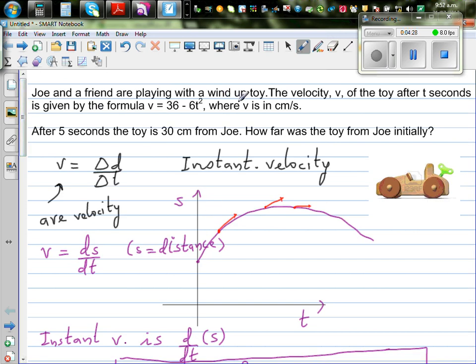Joey and a friend are playing with a wind-up toy. This is a wind-up toy. The velocity V of the toy after t seconds is given by this formula. This is your velocity with respect to time, where V is centimeters per seconds. After 5 seconds, that means when t is 5, the toy is 30 centimeters away from Joey. That means S is given to be 30. How far was the toy from Joey initially? That means the question is, when t is 0, what is S?